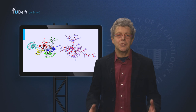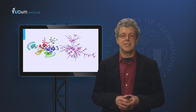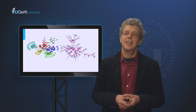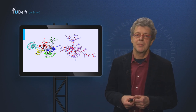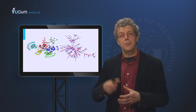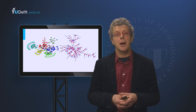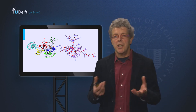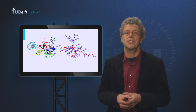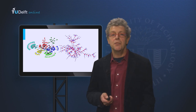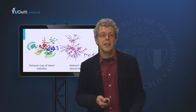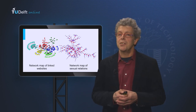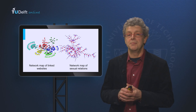Welcome to this lecture on actor and network analysis. My name is Bert Enstrink and I will be your teacher on this subject. These colorful pictures behind me are maps representing social networks. One shows you the structure of a network of websites that refer to each other, and the other shows us the pattern of sexual relations in a group of people.